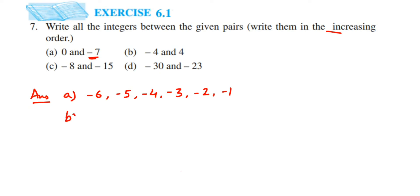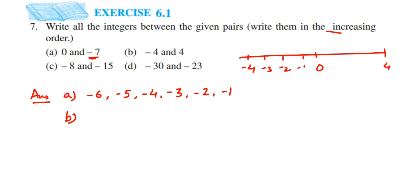The next one: we have minus 4 and 4. On the number line, minus 4 is on the left, then 0, then 4 as a positive integer on the right. Going from minus 4 towards the right hand side in increasing order, after minus 4 we get minus 3, minus 2, minus 1, then 0, then 1, 2, and 3.